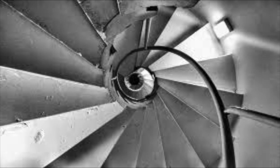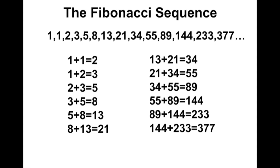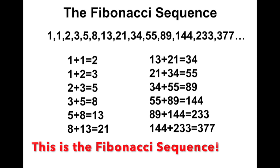So what is the Fibonacci sequence? Basically, we start with the numbers 0 and 1, and add their sum — so 0 plus 1 equals 1. Then to get any other number in the sequence, you take the sum of the previous two numbers. Starting with 0 and 1 equaling 1, our next number is 1 plus 1 which equals 2, then 2 plus 1 equals 3, then 3 plus 2 equals 5, then 5 plus 3 equals 8.